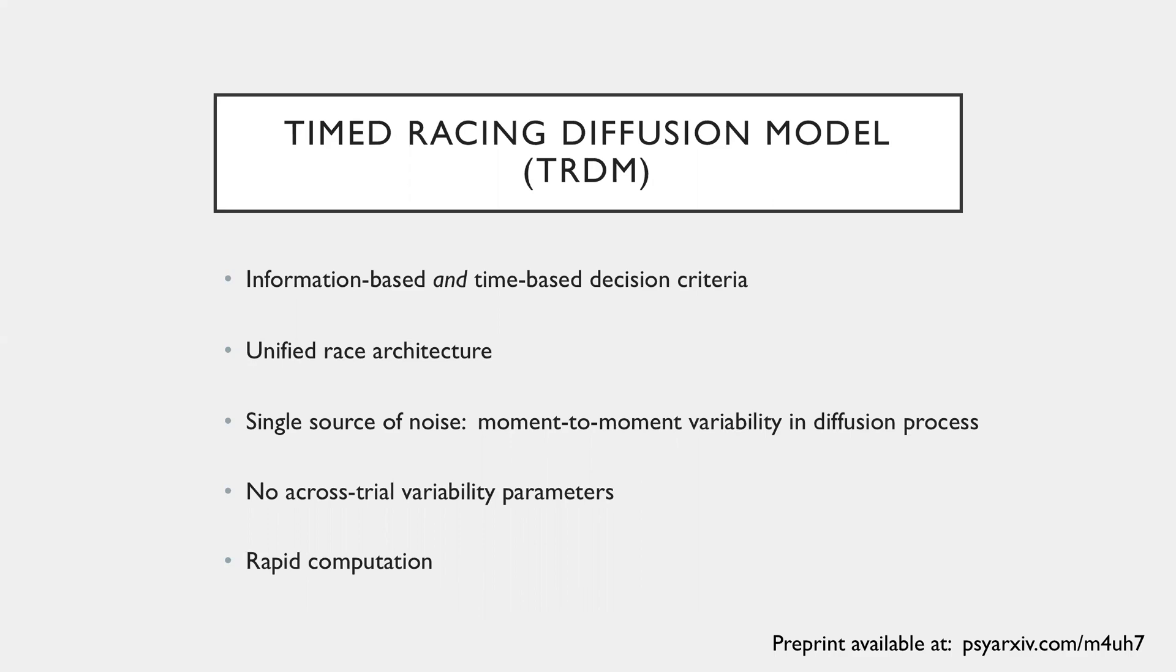It's in a unified race architecture that we assume only a single source of noise. So only moment to moment variability in the diffusion process. And there are no across trial variability parameters. And this leads to a very rapid computation. Each accumulator is just represented as a one boundary diffusion process or a shifted Wald, which have very rapid density and distribution functions available for.